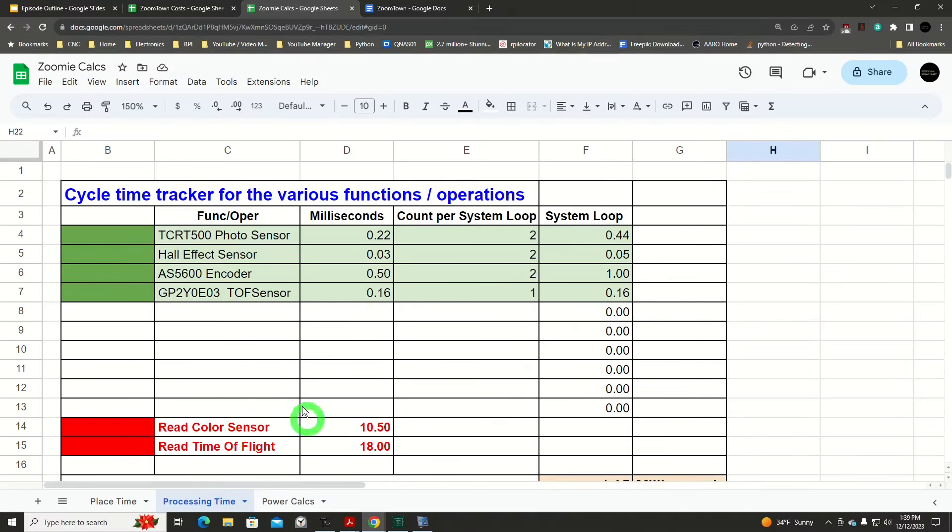Looking here at my next spreadsheet, which was what I used to track and record all of these cycle times for the various sensors. Now the two that are red flagged down here, we've got the read the color sensor and then read the time of flight. That's not the current one that we're using, the sharp, but the other one. That would have taken 28 and a half milliseconds for just those two sensors. That's a long time.